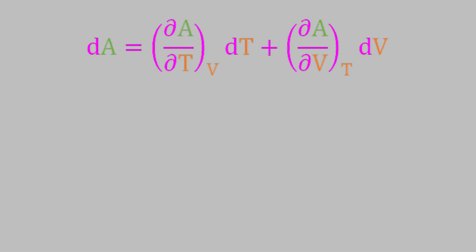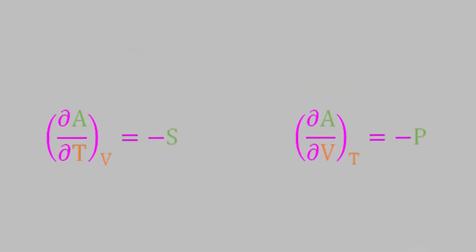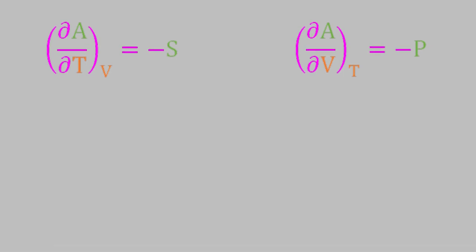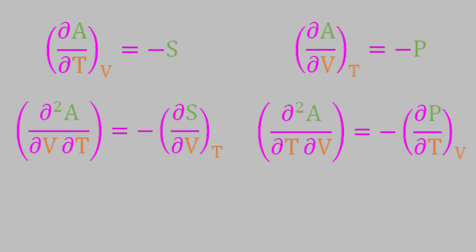A has two variables, temperature and volume. So if we take the total derivative of A, we get the partial derivative of A with respect to T times dT, plus the partial with respect to V times dV. Now, let's compare that equation for the total derivative to the expression that we already have for the Helmholtz free energy. If we compare them, we can see that the partial derivative of A with respect to T is equal to negative S, and the partial with respect to V is equal to negative P. Our second step will be to differentiate each of these by the other variable — we differentiate the first quantity with respect to V, and the second one with respect to T.